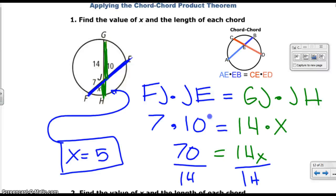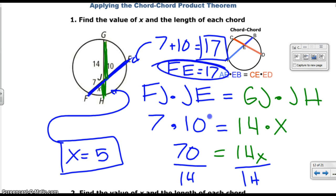So, we know that FJ is 7, which we already marked, and JE is 10. So, what's 7 plus 10? FJ is 7 plus 10, so that should be 17. And 17 is the length of FE. Important to recognize the length of FE. Now, what about the second chord? Well, we know that GJ is 14. And JH, we just found, is 5. So, 14 plus 5 is 19. And that's the length of the whole chord, GH.